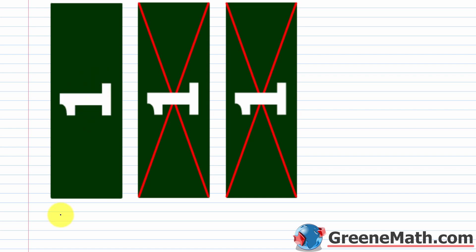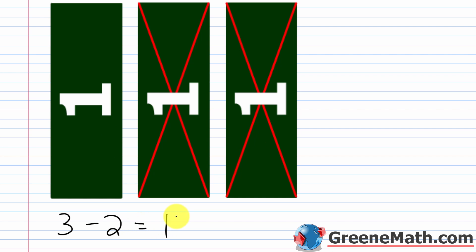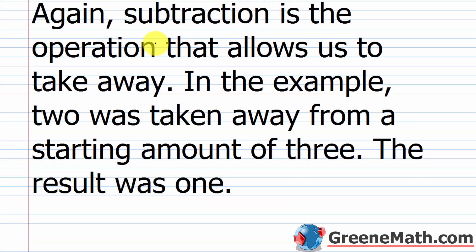This is basically the subtraction problem: 3, which is the amount you start with, minus 2, which is the amount that's going to be taken away, and that's going to equal 1, which is the amount that you're going to have left over after you've spent the money. So subtraction is the operation that allows us to take away. In the example, 2 was taken away from a starting amount of 3. We started with $3, we spent 2 — that's what's taken away — and the result was 1. That's what we had left over.